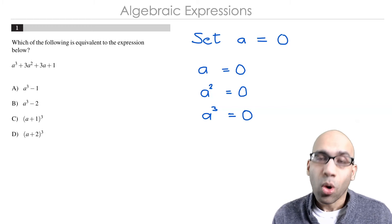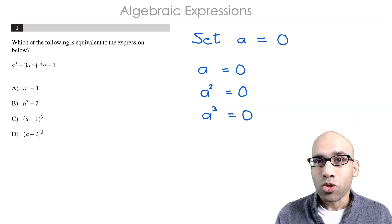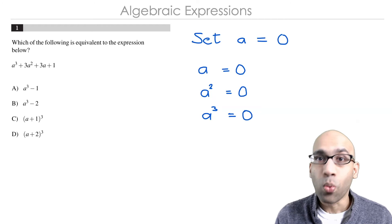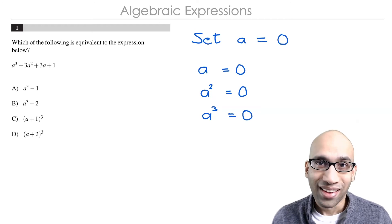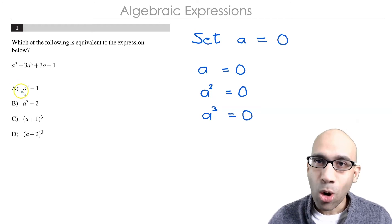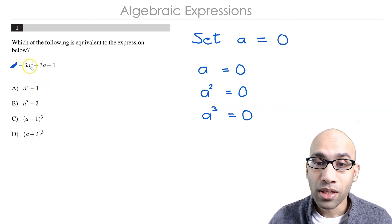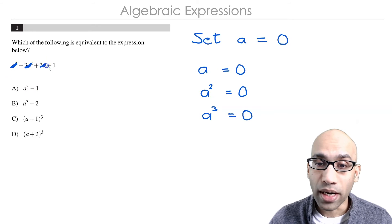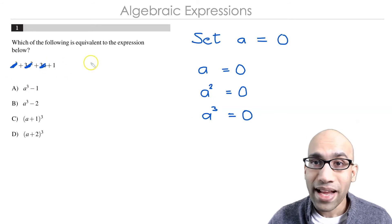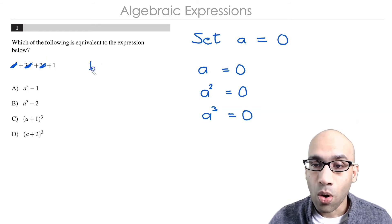When you set a to be equal to 0, all the powers of a will be 0. So a² and a³ will be 0 as well. In other words, you can cancel out all the terms that contain a. So let's just start canceling out a³, a², and 3a, and all that remains here is the number 1.